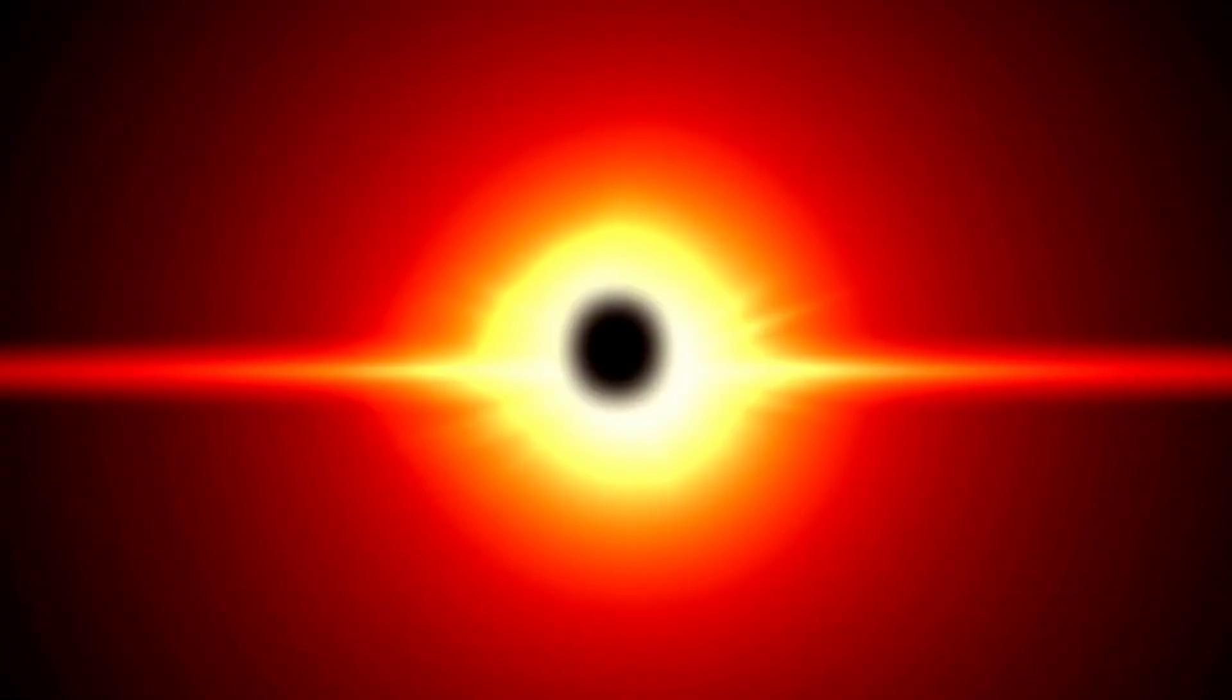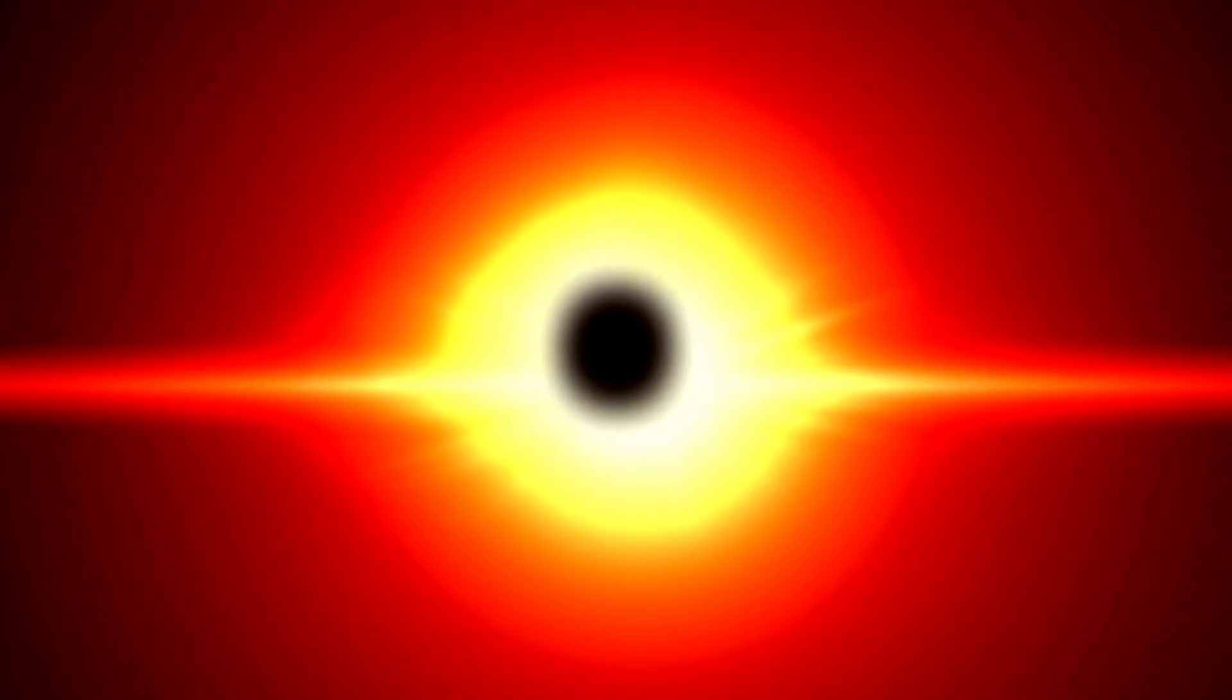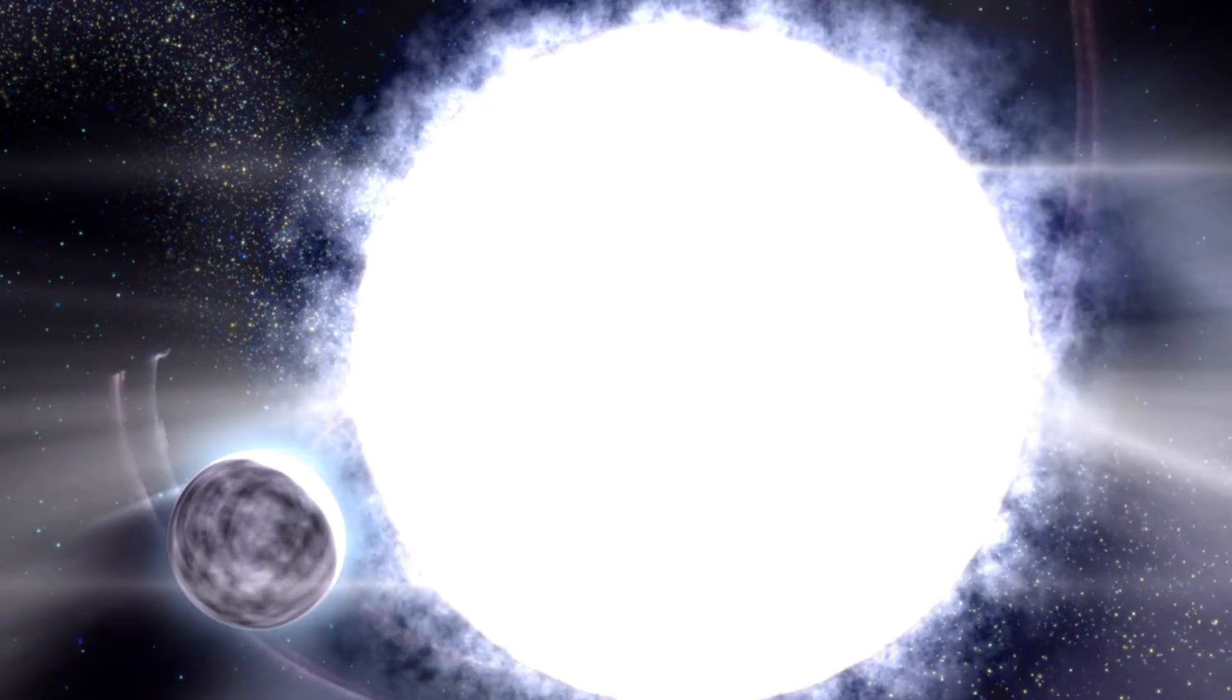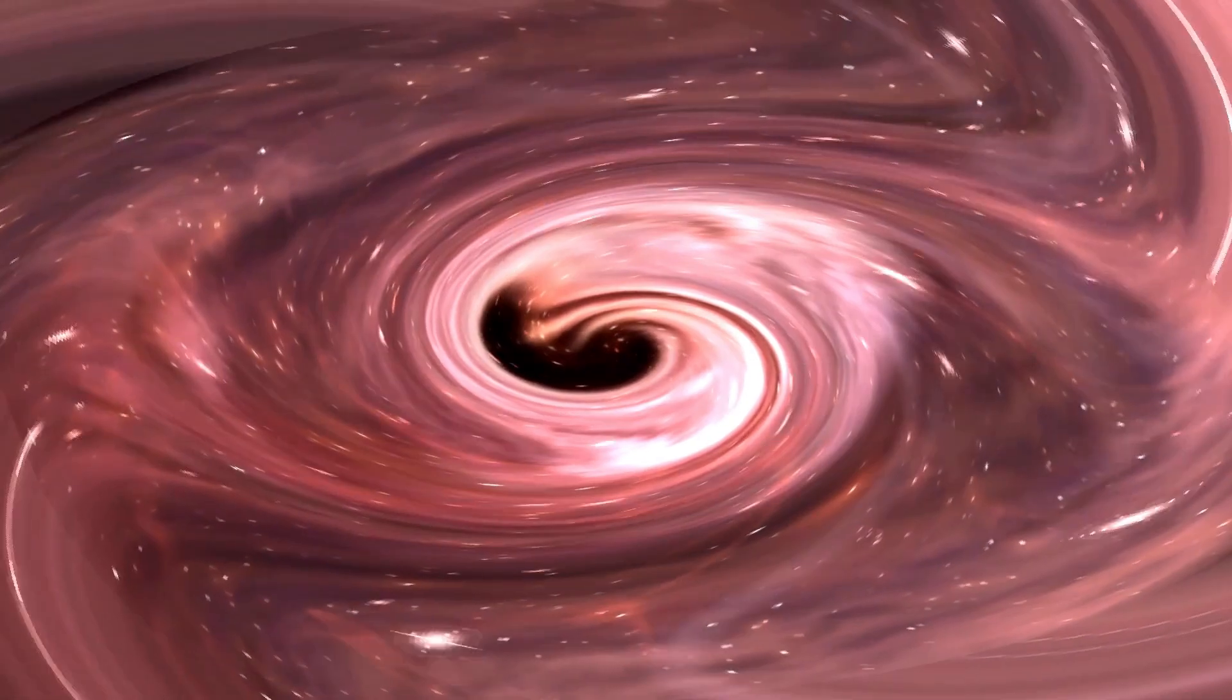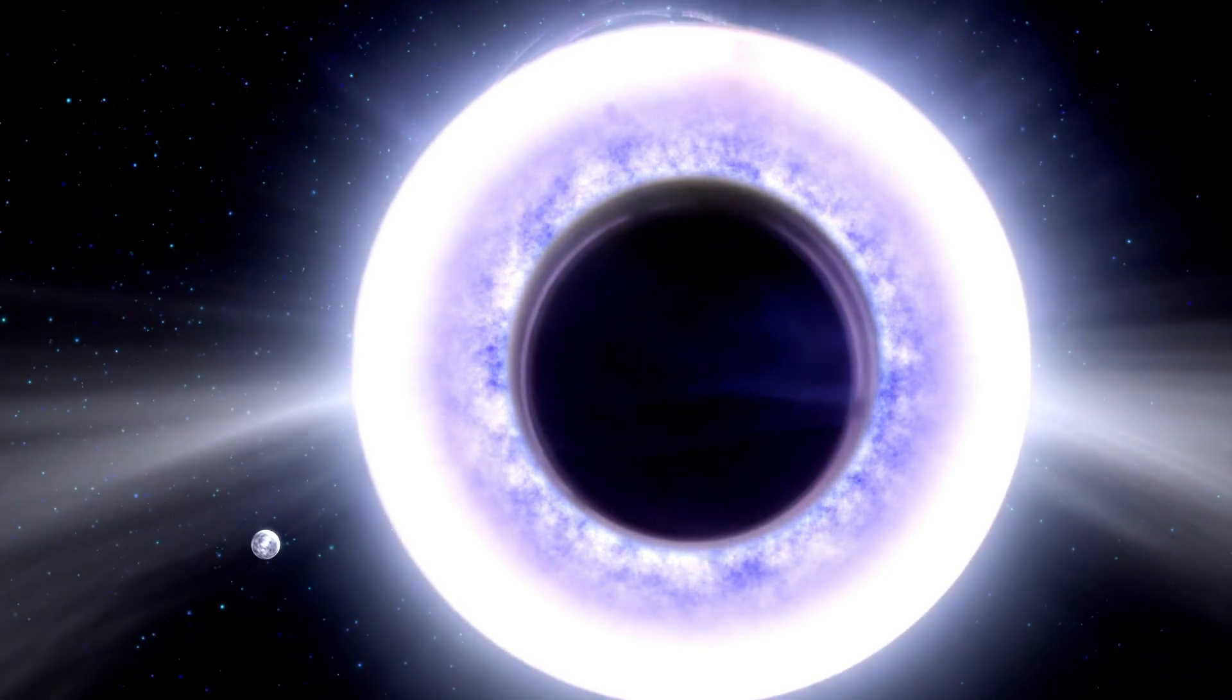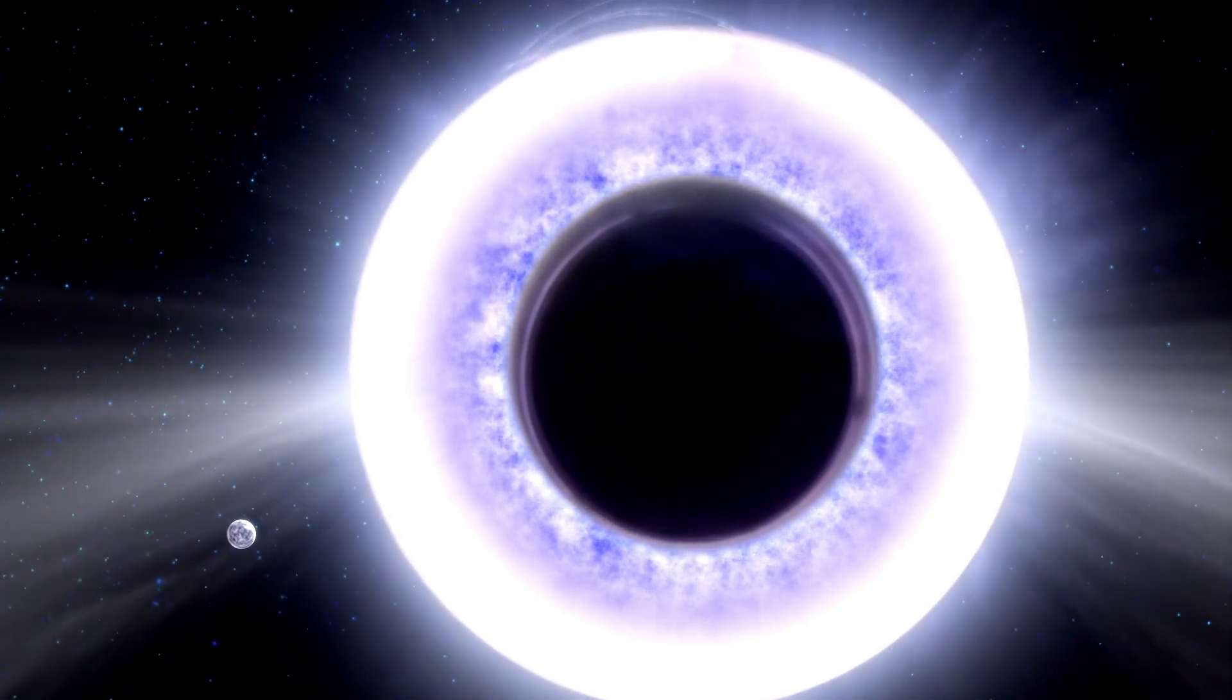Furthermore, the concept of black hole thermodynamics has emerged as a fascinating field of inquiry. According to this framework, black holes have entropy and temperature, suggesting that they obey the laws of thermodynamics. The famous physicist Stephen Hawking introduced the idea that black holes can emit radiation, known as Hawking radiation, due to quantum effects near the event horizon. This radiation implies that black holes are not completely black and can eventually evaporate over astronomical timescales, leading to intriguing implications about the ultimate fate of black holes and the information paradox.